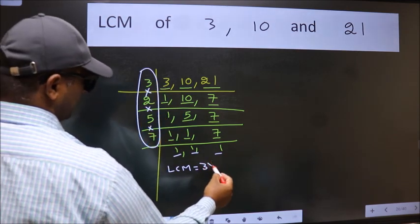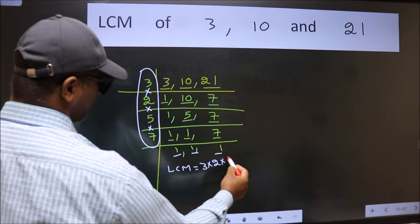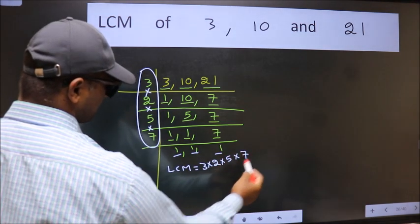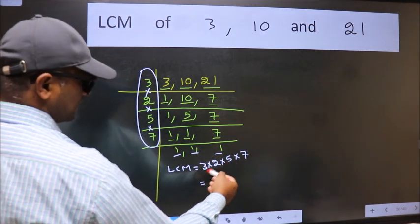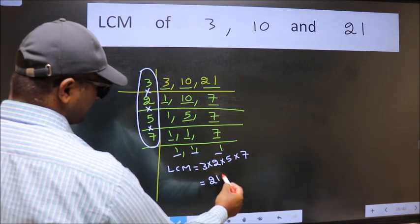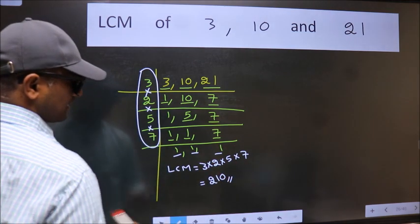That is 3 times 2 times 5 times 7. When we multiply these numbers, we get 210 as our LCM.